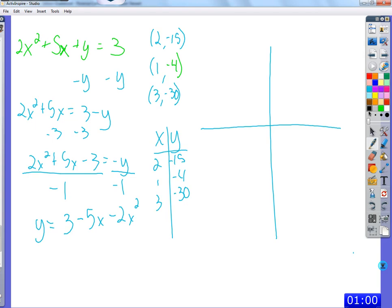So, if we want to graph these solutions, this is our x, this is our y, x is horizontal, y is vertical, x is 2, and y is negative 15. 15, and 2, negative 15, 1, negative 4. 3, negative 30 is too far down there to graph, but there's a point down there at 3, negative 30.